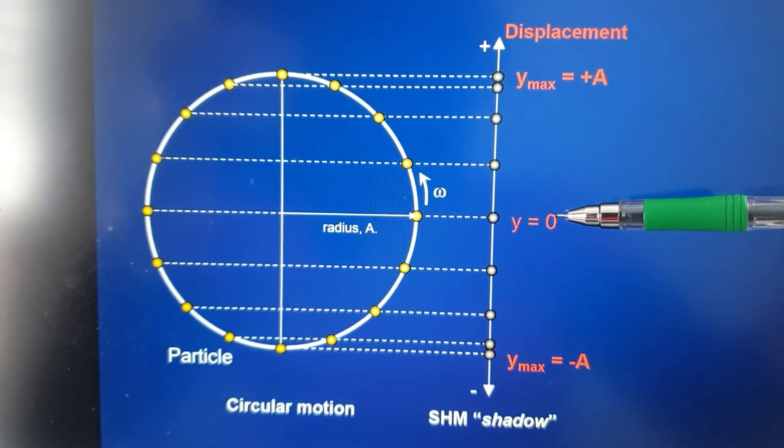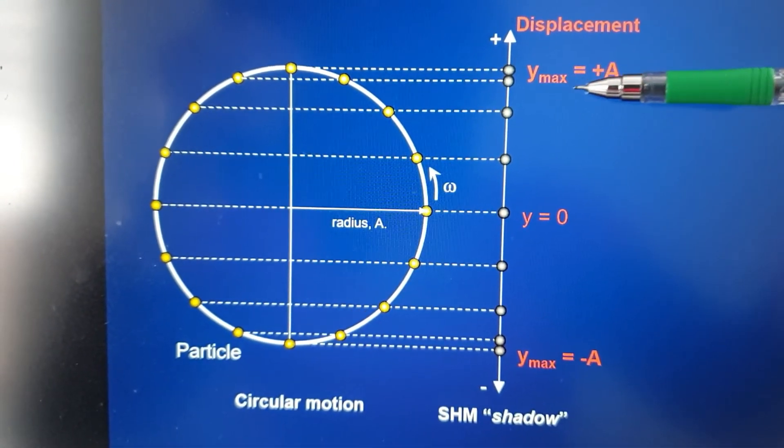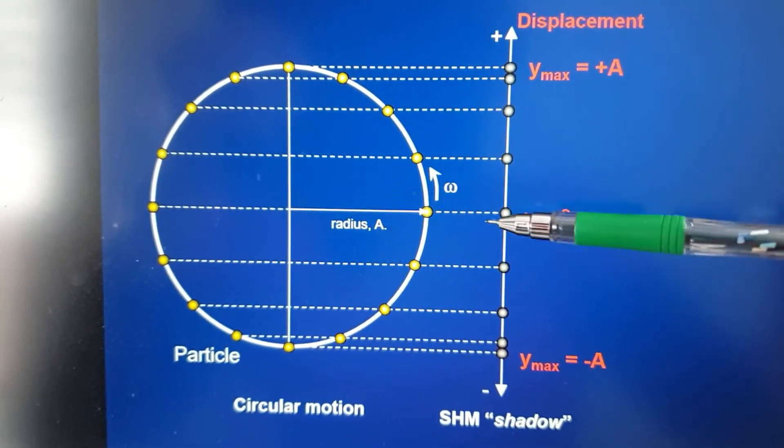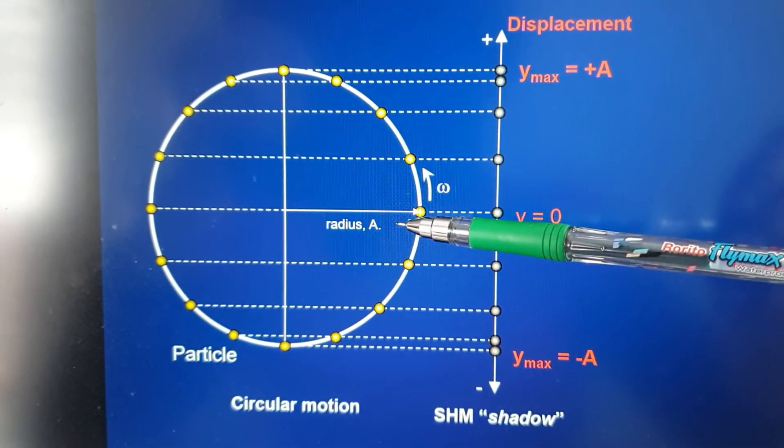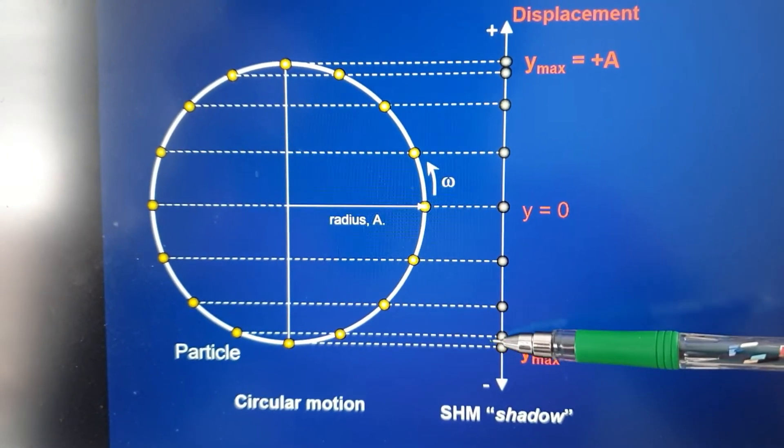Everything above the x-axis is positive, so it's positive displacement, and maximum displacement is your amplitude. The radius of your reference circle is also the amplitude of the simple harmonic motion particle. Anything below the x-axis is negative displacement, so minus A.